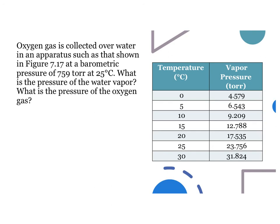In a problem such as this, you'd first want to find the appropriate value in table 7.3. The vapor pressure of water at 25 Celsius is 23.756 torr.